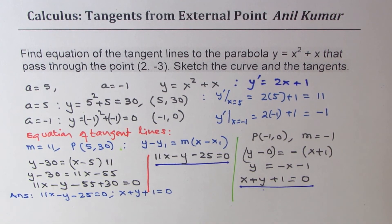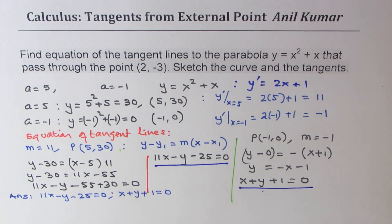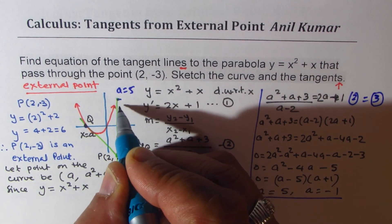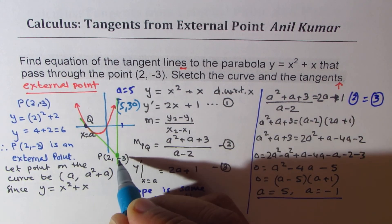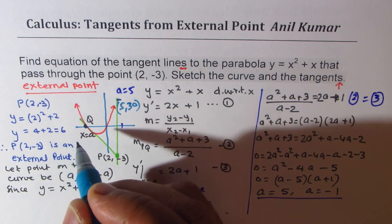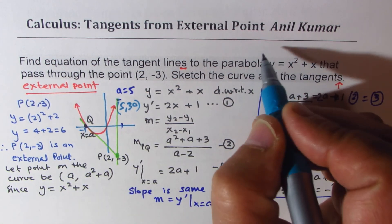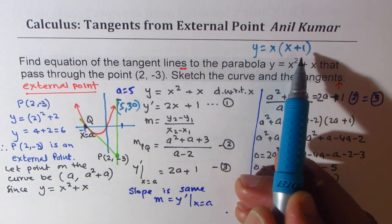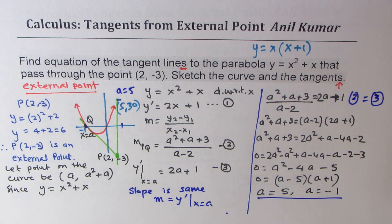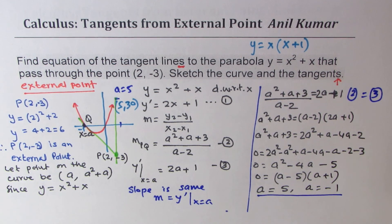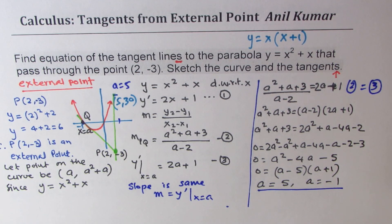The equations are 11x − y − 25 = 0 and x + y + 1 = 0. Here is the sketch — the parabola has zeros at 0 and minus 1, with the point (5, 30) on the curve above and (2, −3) as the external point. That's how you find tangents from an external point. Feel free to write your comments, and if you like and subscribe to my videos, that would be great. Thanks for watching and all the best.